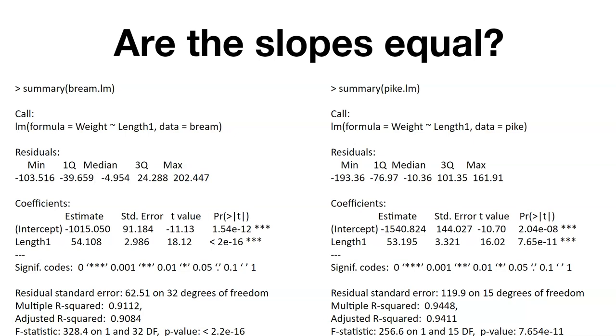But what about the slopes? Now if we look at the slopes, we can see that the slope for the bream is 54.1, and the slope for the pike is 53.19. And so we might think, well, those values are close enough. We might assume that those slopes are equal. So we could run the t-test to assess whether or not these are equal.